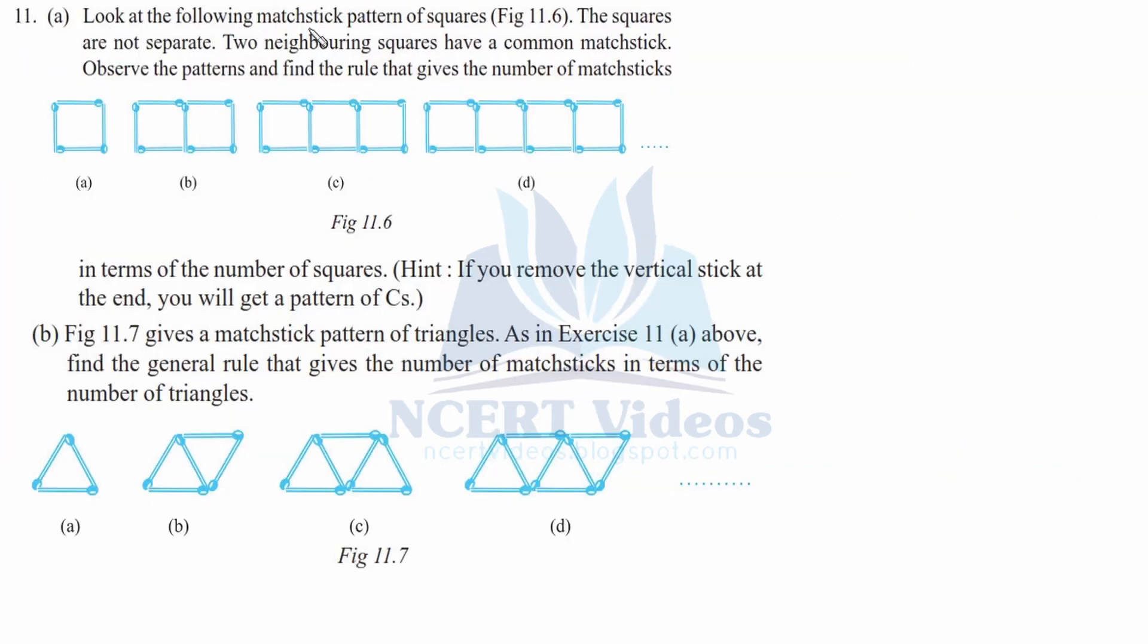Question 11a: Look at the following matchstick pattern of squares. This is the figure. The squares are not separate because they are adjacent. The neighboring squares have a common matchstick. You can see here, this is common, this is common. Observe the patterns and find the rule that gives the number of matchsticks. You have to observe and find the number of matchsticks in terms of the number of squares. If you remove the vertical stick at the end, you will get the pattern of C's.